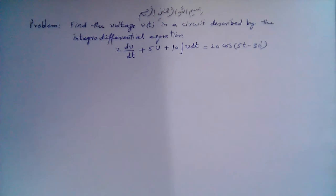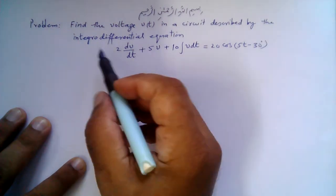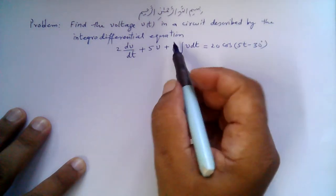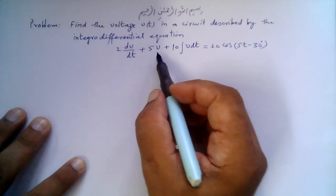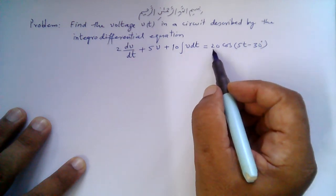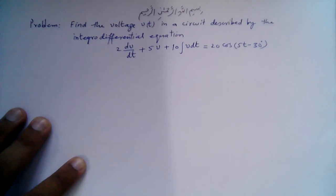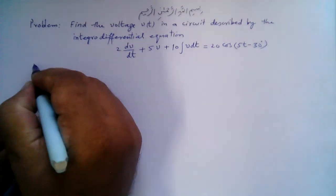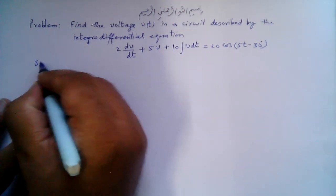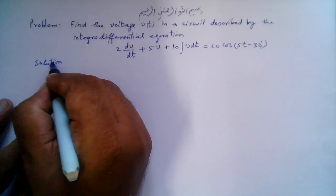Bismillahirrahmanirrahim. Let us consider this problem: find the voltage V(t) in a circuit described by the integro-differential equation 2dV/dt + 5V + 10∫V dt = 20cos(5t - 30°). This solution can be found in the time domain, but we will use the phasor domain.